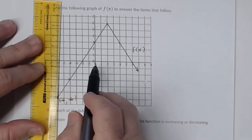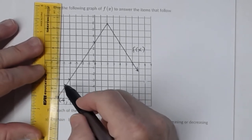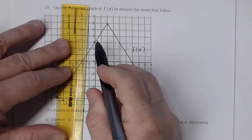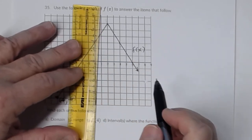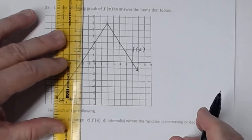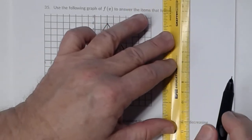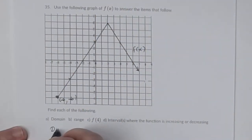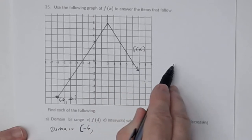Every x value on this graph consists of all numbers — not just integers but all rational and irrational numbers between them, an infinite number of these. So you're going from negative six all the way to infinity, because this arrow means you keep on going. That's your domain: bracket negative six, comma, infinity with a parenthesis — bracket because the closed circle means negative six is included.